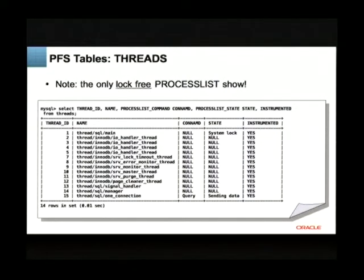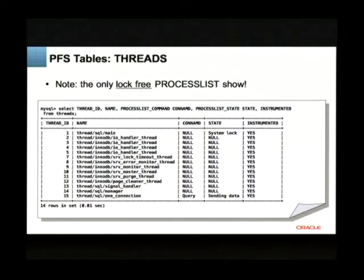Thread instrumentation is always enabled, and you can see what happens inside — if your threads and sessions are performing well. It's the only way to get data without blocking the server when you look inside. The classic command SHOW PROCESSLIST does an exclusive lock on your instance, so all your work is blocked when you show the output. People who don't know this run SHOW PROCESSLIST every second, blocking their instance every second. So instead, you should use Performance Schema, which gives you that information without the lock.